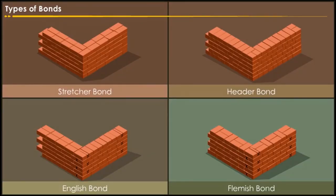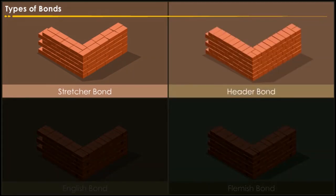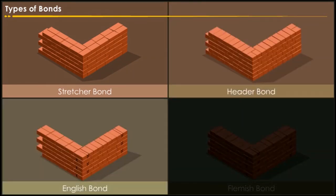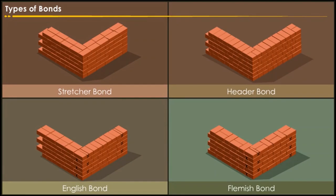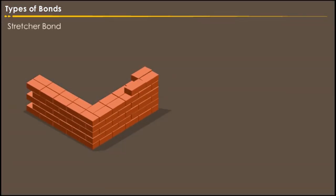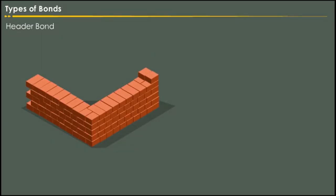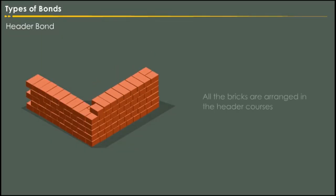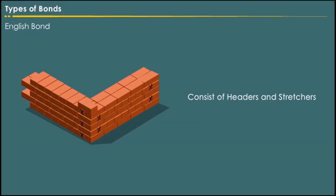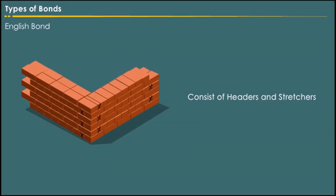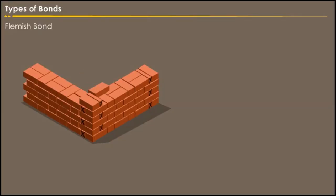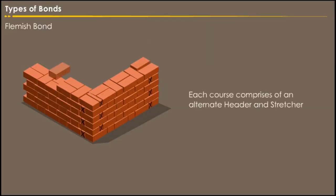The various types of bonds generally used in brick masonry are stretcher bond, header bond, English bond, and Flemish bond. In stretcher bond masonry, all the bricks are arranged in stretcher courses. In header bond brick masonry, all the bricks are arranged in header courses. English bond courses consist of headers and stretchers. In Flemish bond, each course comprises alternate headers and stretchers.